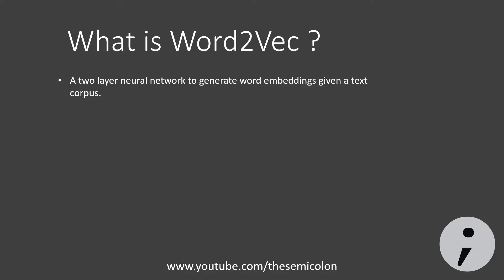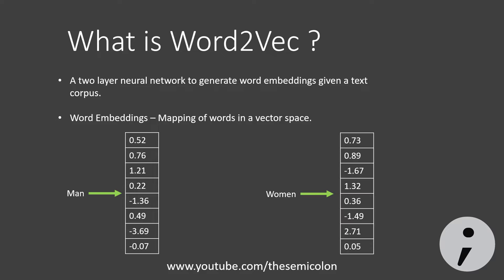Word embeddings map all the words in a language into a vector space of a given dimension. Word2vec is a popular method to generate word embeddings. It converts words into vectors, and with vectors we have multiple operations like add, subtract, and calculate distance — and that is how relationships among the words are preserved.